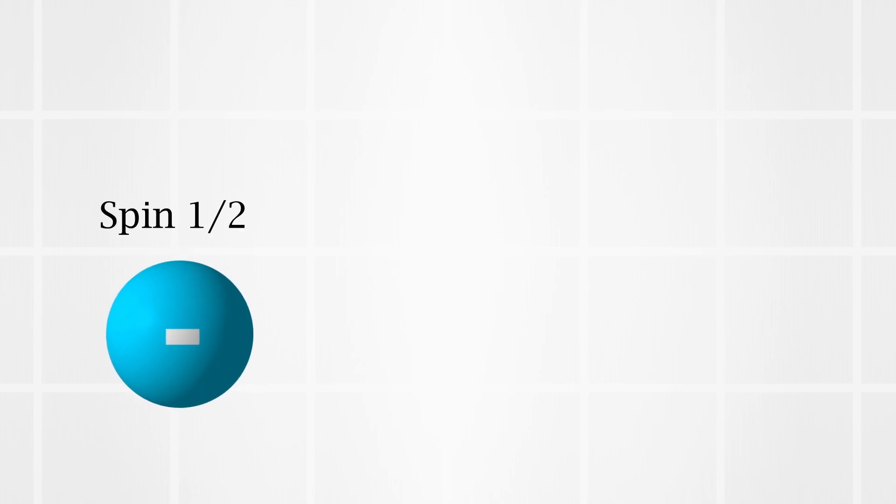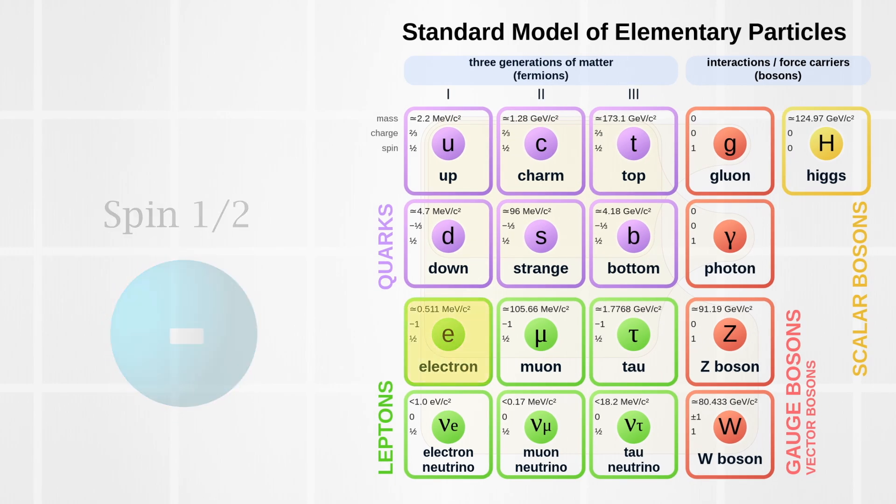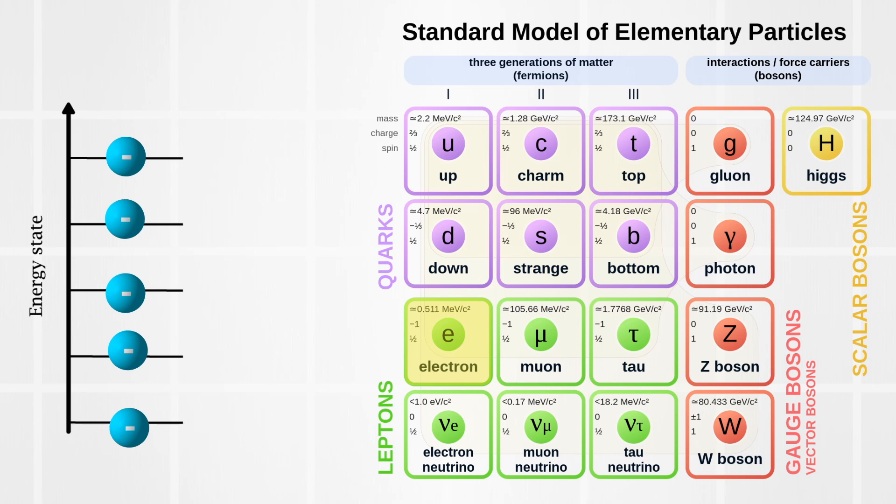Electrons which are spin one-half particles are fermions. Which means that only one electron can occupy one energy state at the same time. But if you take two spin one-half particles and you put them together, they will actually start acting as a boson. And bosons can all occupy the same energy state.